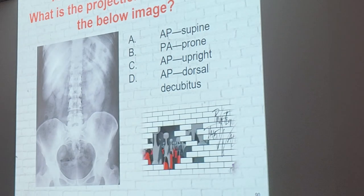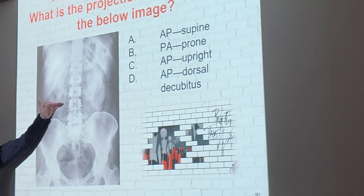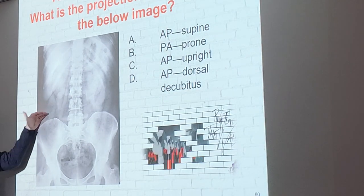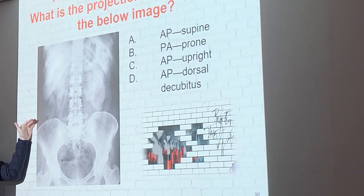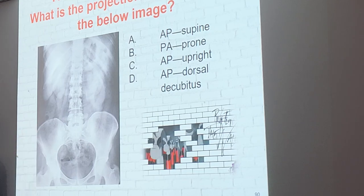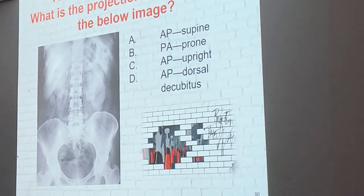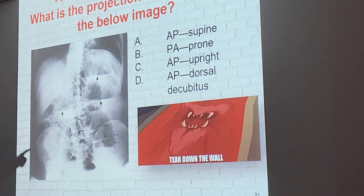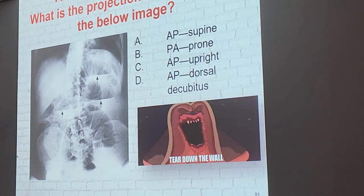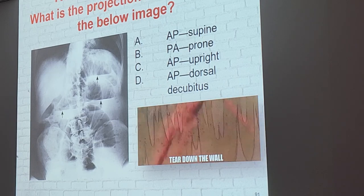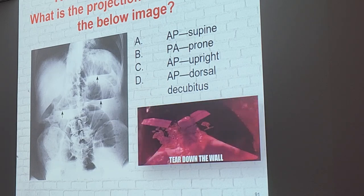You can also look at air in the abdomen: if there's no straight horizontal line, the patient is on their back. If you see a straight horizontal line cutting across the gas, they are upright — standing up. You'll learn to eyeball that as you progress.